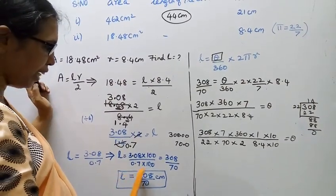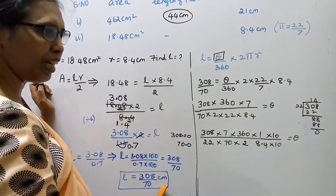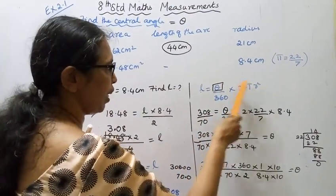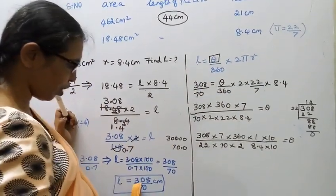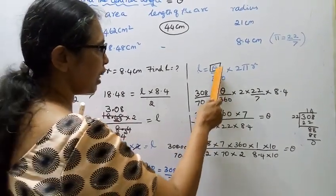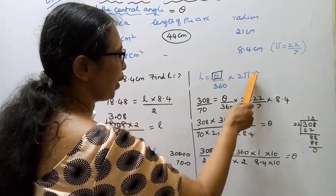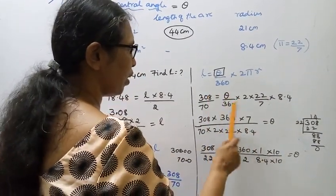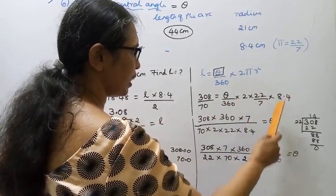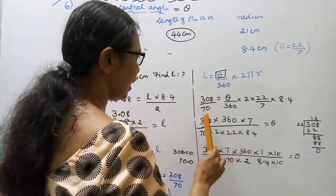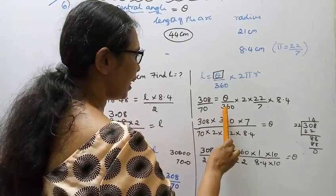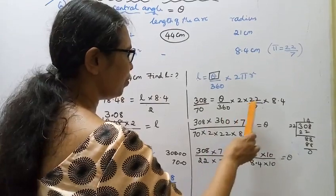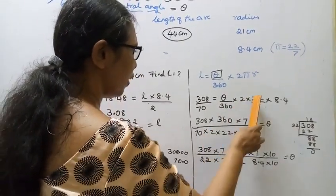L equals 308 by 70. Using theta by 360 into 2 by 7 into 8.4, theta equals 308 by 70 into 360 by 2 by 7.